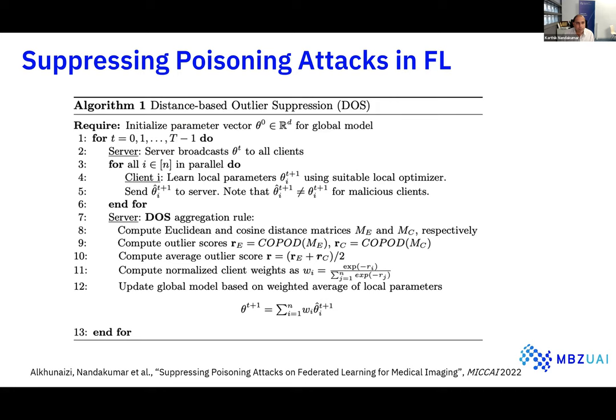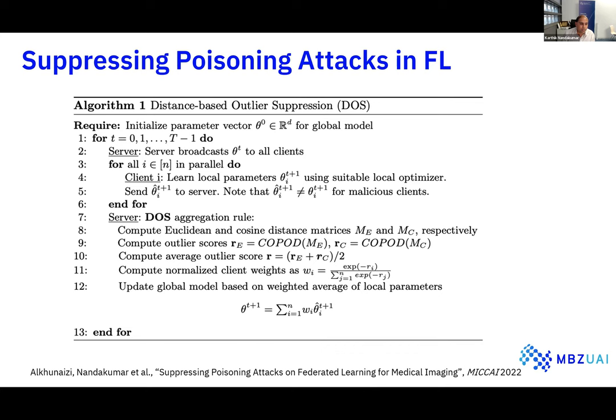In the distance-based outlier suppression algorithm, each participant first learns local updates. We then compute both Euclidean and cosine distances between updates, obtaining two matrices. Outlier scores are computed from these two matrices, averaged, and a softmax function determines normalized weights for each client. These normalized weights are used for aggregation.